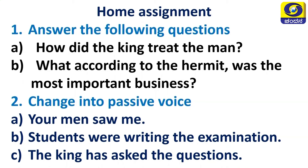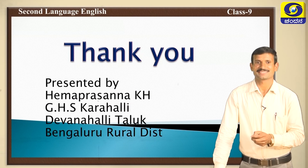Now take down the assignment. Answer the following questions: First — How did the king treat the wounded man? Second — What, according to the hermit, was the most important business? Also change the following sentences into passive form: One — 'Your men saw me.' Two — 'Students were writing the examination.' Three — 'The king has asked the questions.' Thank you very much.